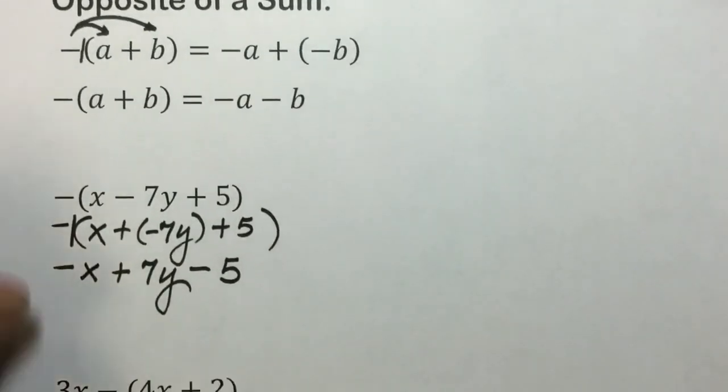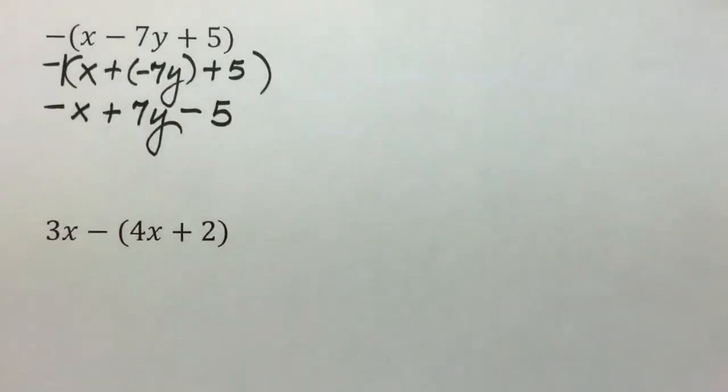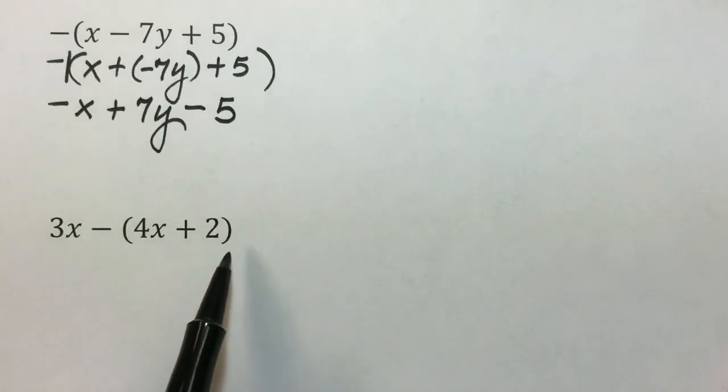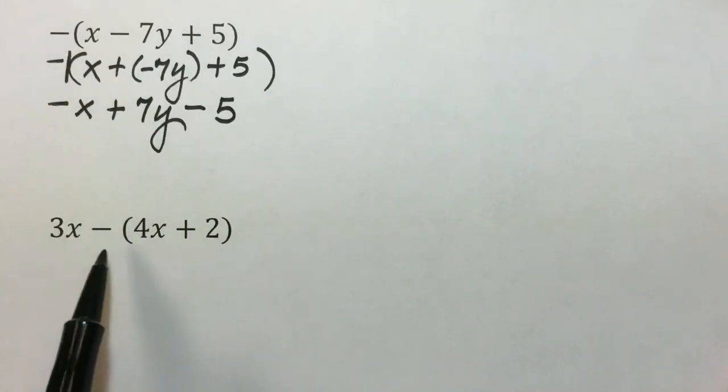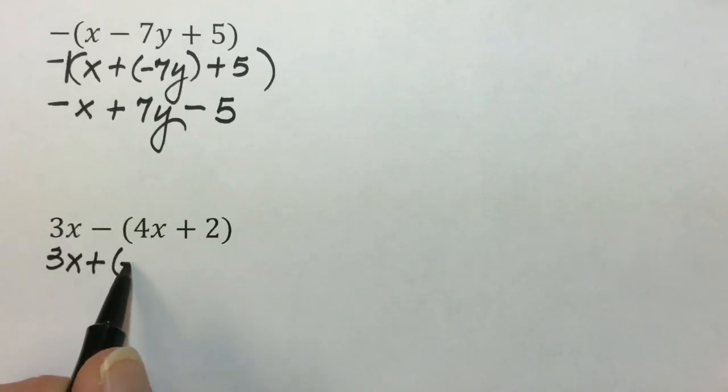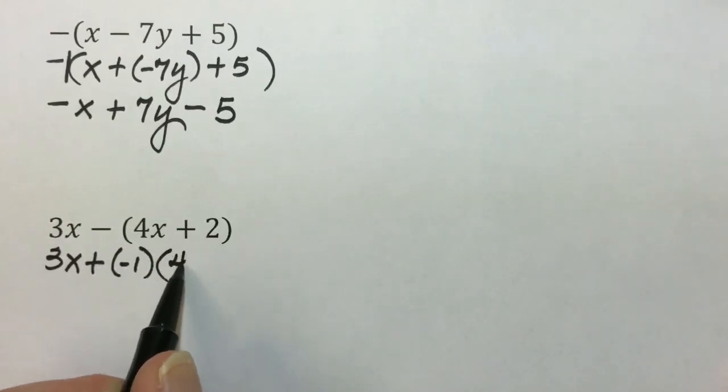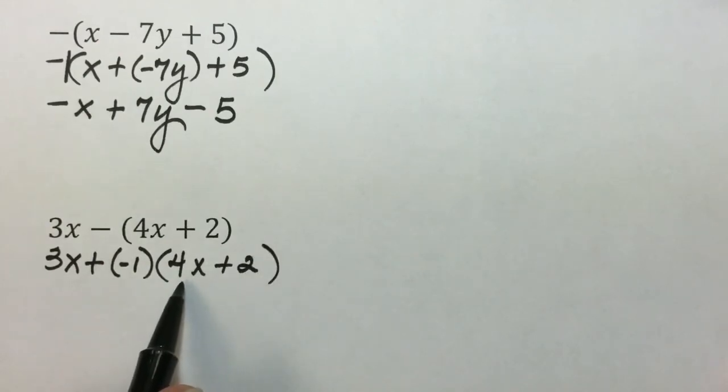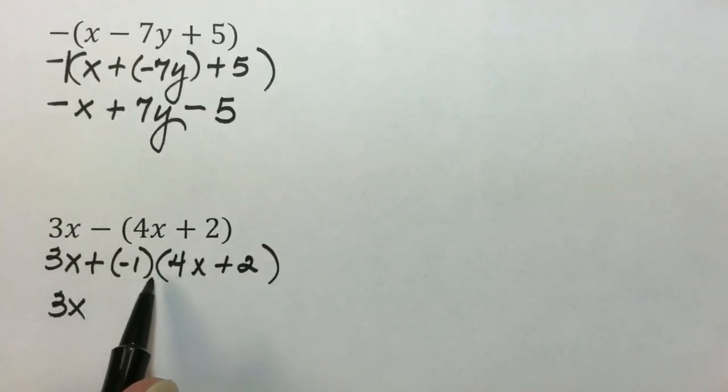In this next example, thinking of order of operations, we can add the opposite of this expression because this can be written as 3x plus negative 1 times the quantity 4x plus 2. Taking the opposite of this sum results in negative 1 times 4 is negative 4x.